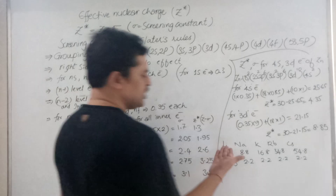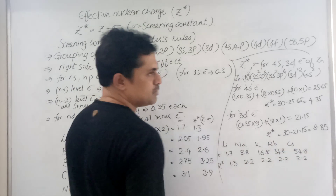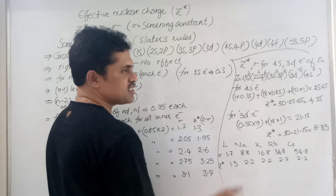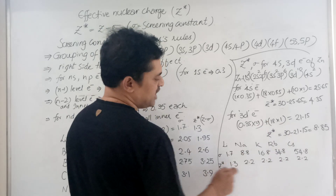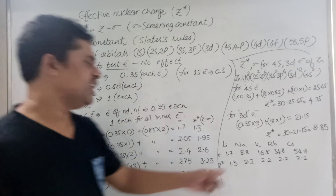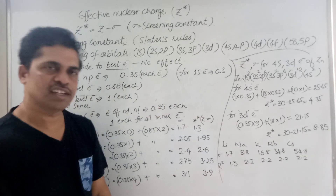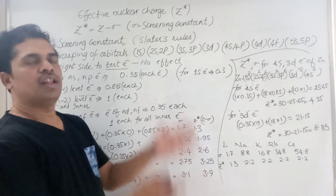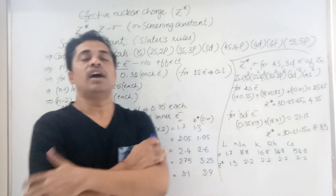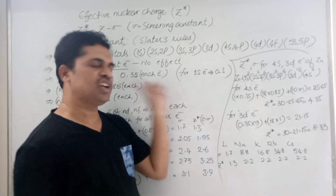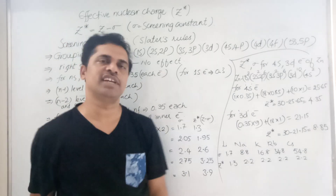Interestingly, for the group 1 elements — lithium, sodium, potassium, rubidium — all have the same screening constant of 2.2. This is an important point to note. Effective nuclear charge and screening constant are very important when explaining atomic radius and ionization potential trends. Hope you understood every point. Signing off.